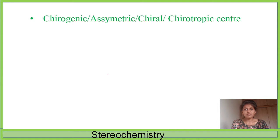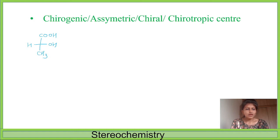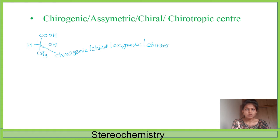Next is the chirogenic center — one can also say asymmetric, chiral, or chirotopic center; all are synonyms of each other. A chirogenic center means any carbon which is attached to four different substituents (chiral ligands) is known as the chirogenic center. In the previous lactic acid example, the tetrahedral carbon attached to COOH, OH, CH3, and hydrogen — four different groups — is the chirogenic center.